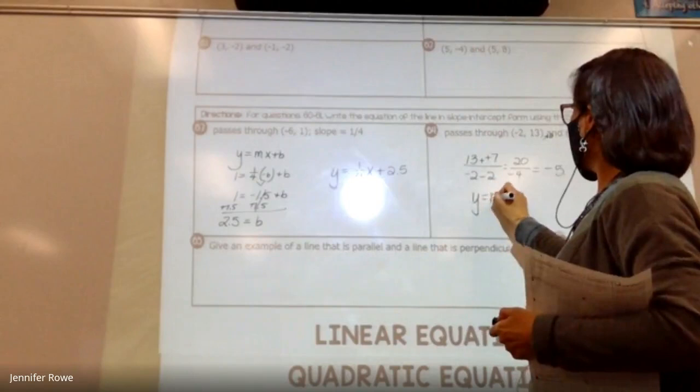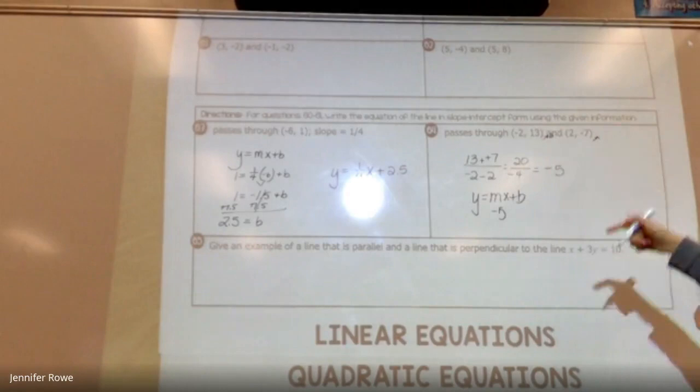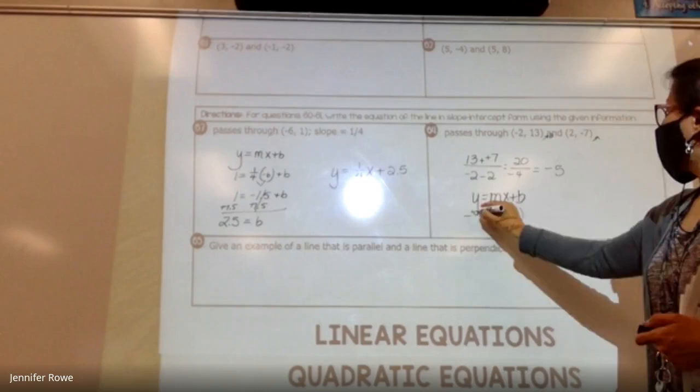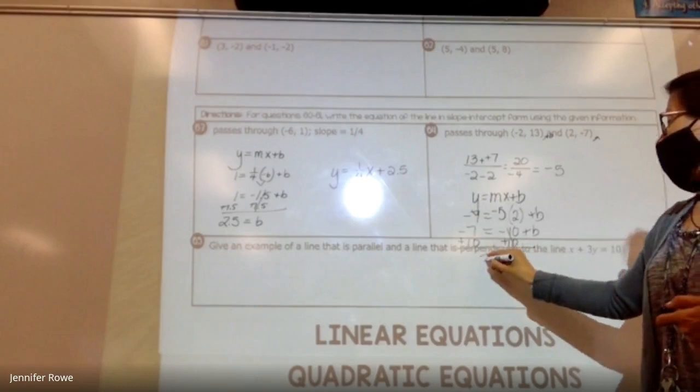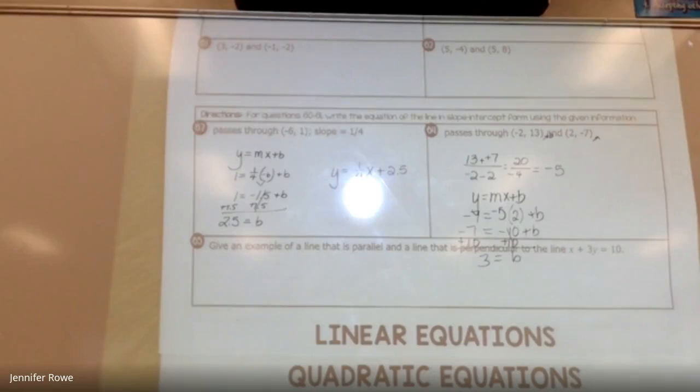1.5 times negative 6 is negative 1.5. So, I'm going to add 1.5 over, so that the B will be isolated, so that you can find out what the y-intercept is. And how do you get 3? The same way as I did this. So, Y equals MX plus B. That's my M. You can pick either point. I don't care which one you do.